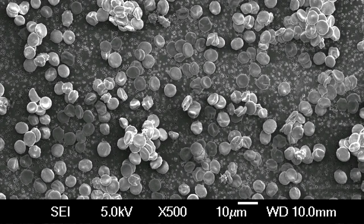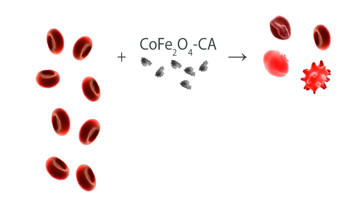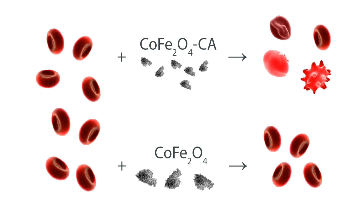We visually inspected scanning electron micrographs and quantified the shape alterations of individual red blood cells. In the sample exposed to citrate acid absorbed nanoparticles, we noticed a more pronounced shape alteration of red blood cells than in the sample exposed to bare nanoparticles.